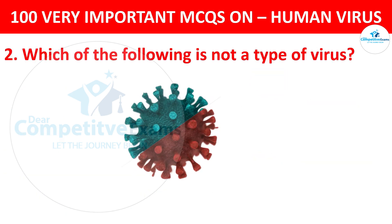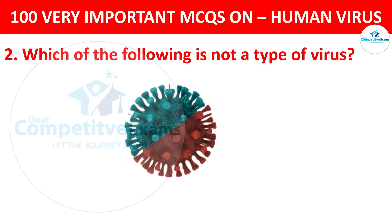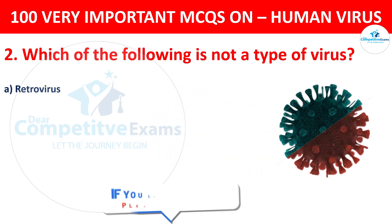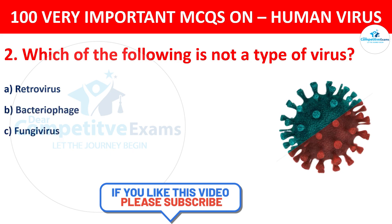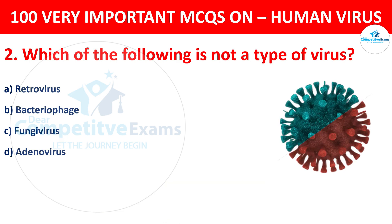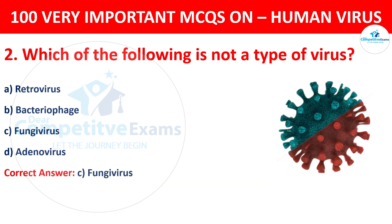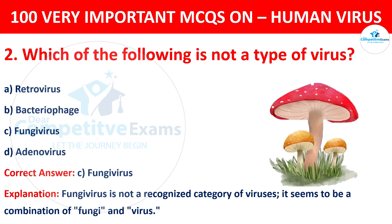Question 2. Which of the following is not a type of virus? Your options are retrovirus, bacteriophage, fungi virus, or adenovirus. The correct answer is C, that is fungi virus. Fungi virus is not a recognized category of viruses — it seems to be a combination of fungi and virus.